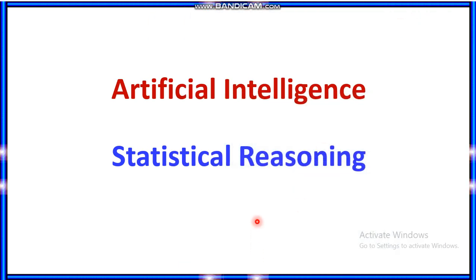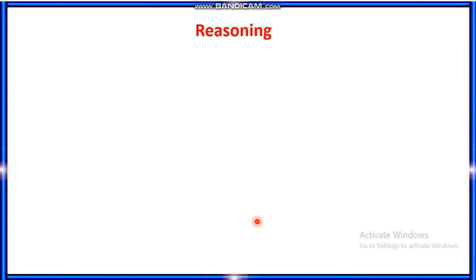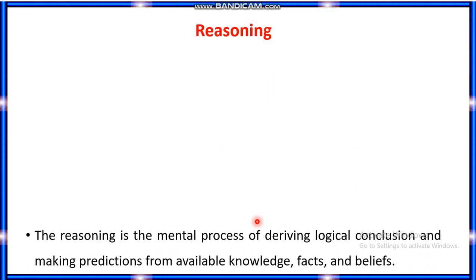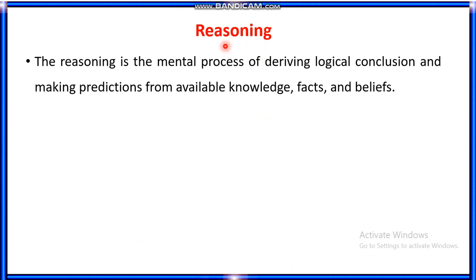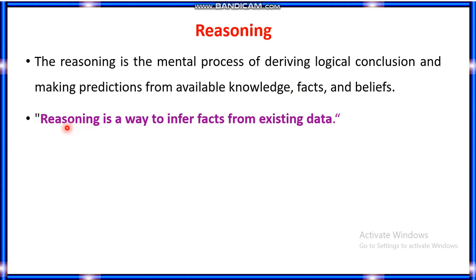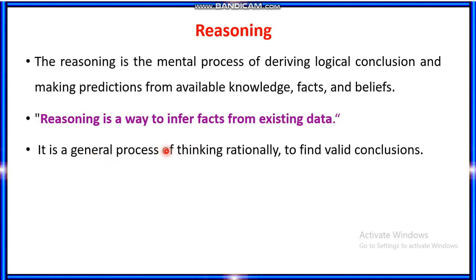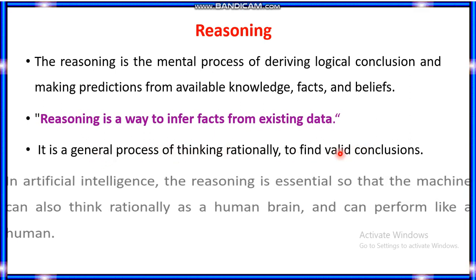Welcome to Modular Classroom. In the artificial intelligence series, today we are going to see about statistical reasoning. Before entering statistical reasoning, first, what is reasoning? Reasoning is nothing but a mental process of deriving logical conclusions and making predictions from available knowledge, facts and beliefs. Reasoning is a way to infer facts from the existing data. It is a general process of thinking rationally to find valid conclusions.